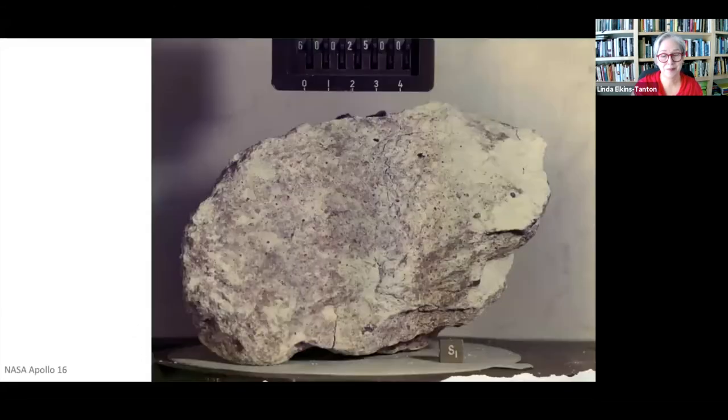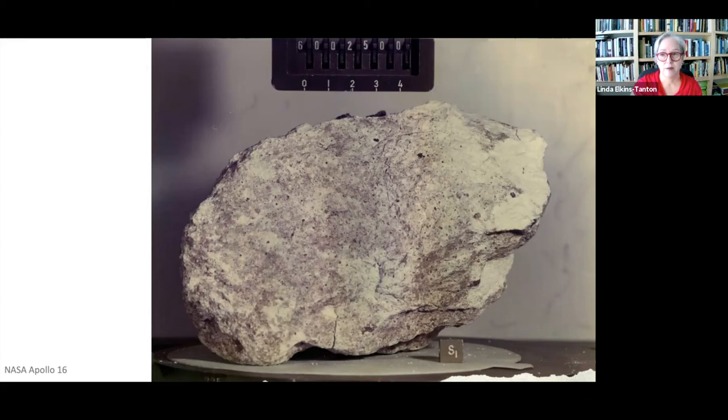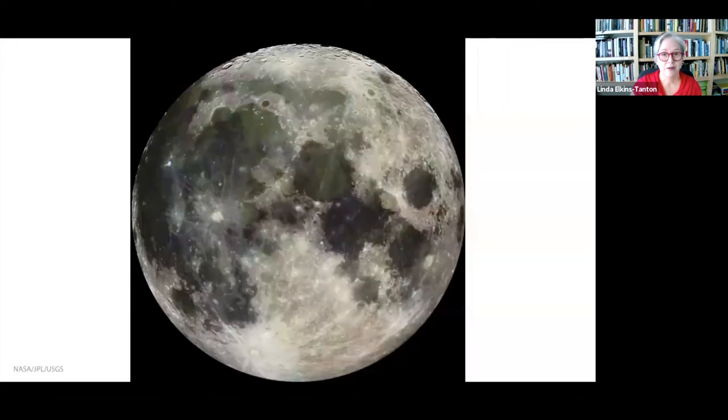This sample of anorthosite was collected by Apollo 16 and its age has been found to be about 4.19 billion years old. It was created by floating in the lunar magma ocean. It turns out that's what these pale highlands of the moon are largely made of. The highlands of the moon - the white parts here that are higher-standing than the dark basalt-filled craters - are largely made of anorthosite that floated in the lunar magma ocean.